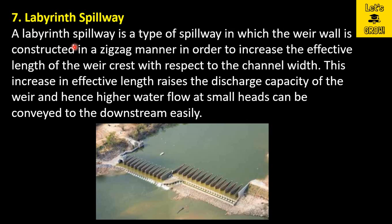The next one is the labyrinth spillway. A labyrinth spillway is a type of spillway in which the weir wall is constructed in a zig-zag manner in order to increase the effective length of the weir crest with respect to the channel width. This increase in effective length raises the discharge capacity of the weir, and hence higher water flow at small heads can be conveyed to the downstream easily. If you provide a simple weir, it has a limited discharge capacity, but if you want to keep the width the same while increasing the discharge capacity, you use a labyrinth spillway.